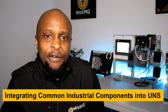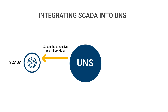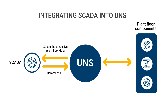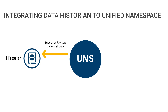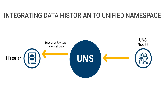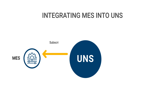Here is a look at how integrating data from common industrial components into a UNS could look. A SCADA system would subscribe to the unified namespace to receive all required data to allow plant operators to run production efficiently, and would also publish back to the UNS commands to be executed by nodes on the plant floor. Since the UNS doesn't capture historical data, a process historian would subscribe to topics of interest and store historical data for later retrieval. An MES also needs data from the plant floor to calculate business performance metrics such as OEE, or overall equipment effectiveness.